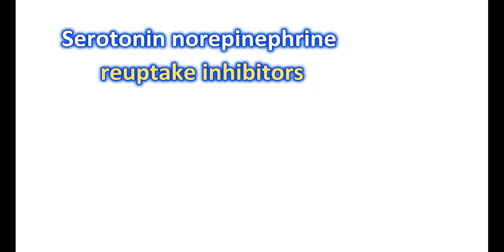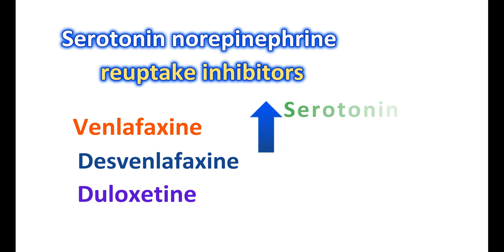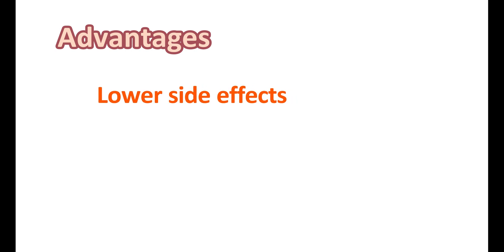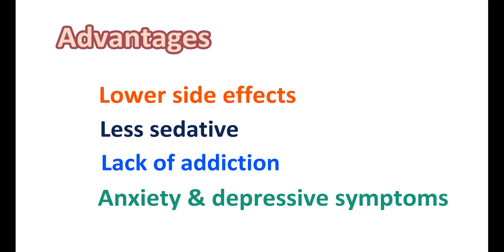Similarly, serotonin-norepinephrine reuptake inhibitors (SNRIs) are another type of antidepressant used to treat anxiety. Drugs like venlafaxine and its dextro-isomer desvenlafaxine, as well as duloxetine, are popularly used. These medications elevate levels of both serotonin and norepinephrine. The advantages of SSRIs and SNRIs include lower side effects compared with benzodiazepines, less sedation, lack of addiction potential, and the ability to relieve both anxiety and depressive symptoms.